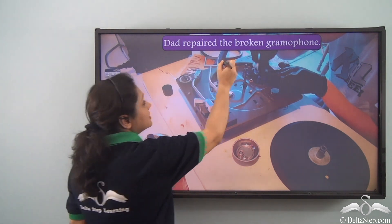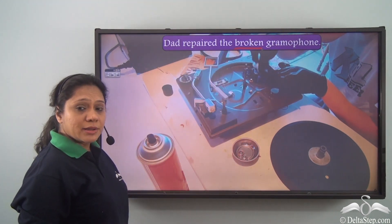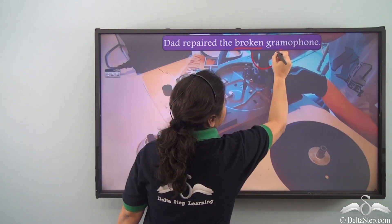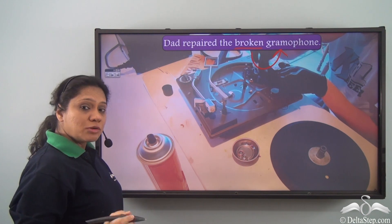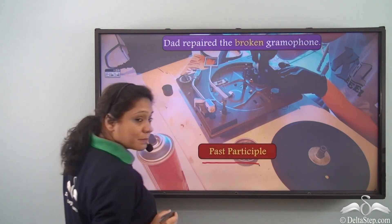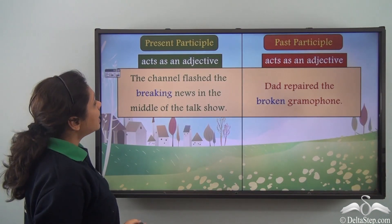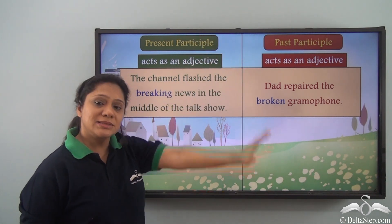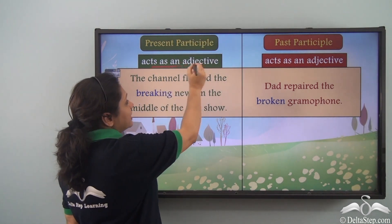Dad repaired the broken gramophone. What is the participle in this sentence? 'Broken' is the past participle, which is acting as an adjective because it is describing the noun 'gramophone.' We now know that both the present participle and the past participle can act as an adjective.